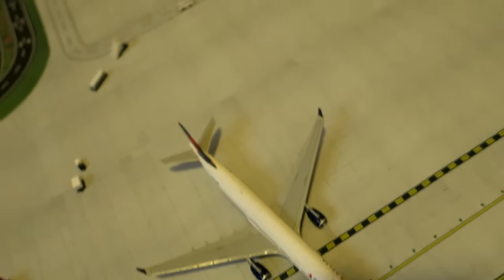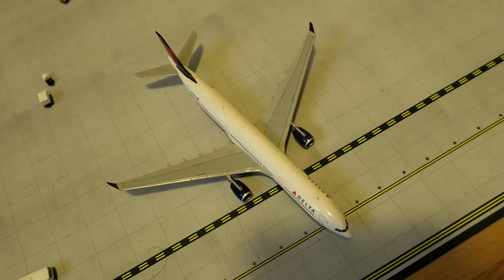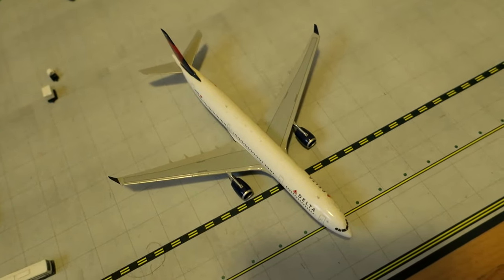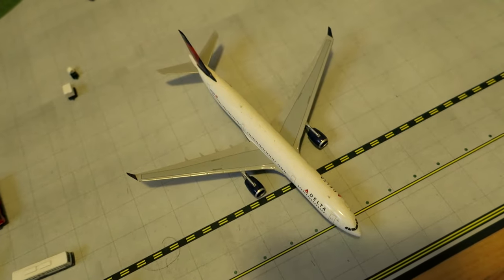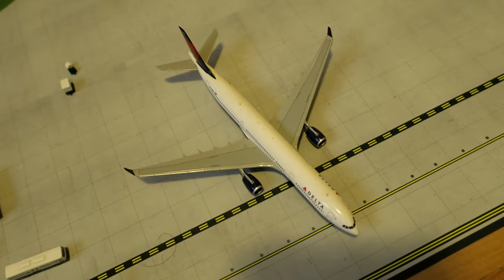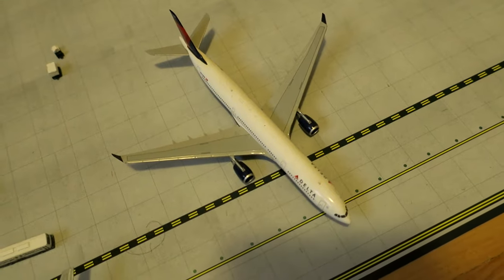Right here, just pulling out of its remote gate, we've got Delta Airbus A330-300. It had arrived from Paris and is now departing to London.